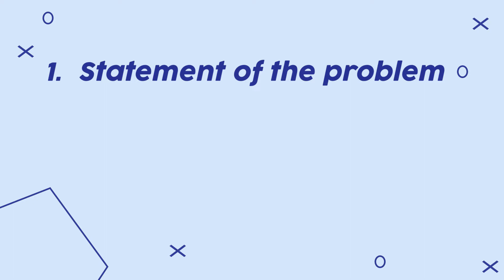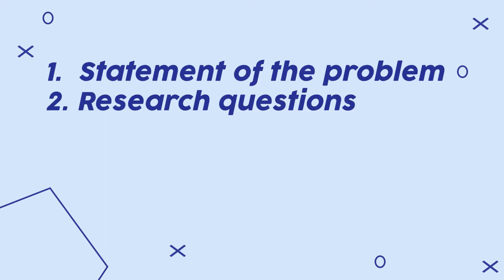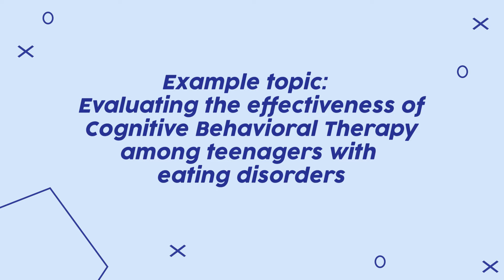Chapter 1: Introduction. The first chapter of a master's thesis introduces the topic to the reader. The central objective is to establish the statement of the problem and the research questions. You will justify to the readers why it's necessary to study your specific topic. For example, if your master's degree is in psychology, your topic of interest might be evaluating the effectiveness of cognitive behavioral therapy among teenagers with eating disorders.